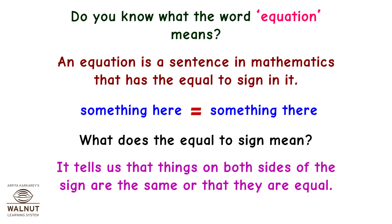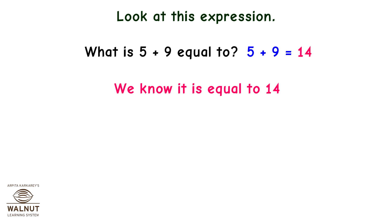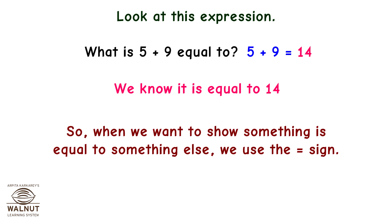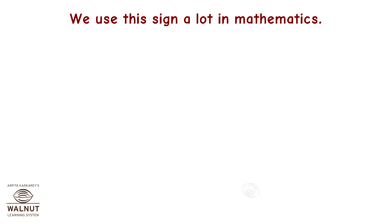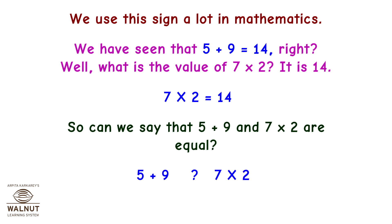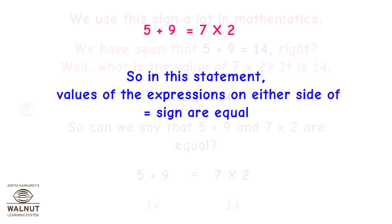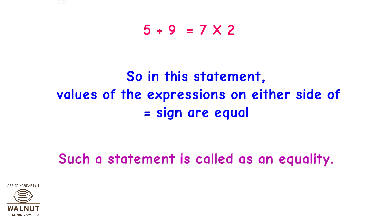What is 5 plus 9 equal to? 5 plus 9 is equal to 14. When we want to show something is equal to something else, we use the equal to sign, also called the sign of equality. Now, 7 into 2 is also equal to 14. So we can say that 5 plus 9 and 7 into 2 are equal: 5 plus 9 is equal to 7 into 2 because 14 is equal to 14. Values of the expression on either side of the equal to sign are equal. Such a statement is called an equality.